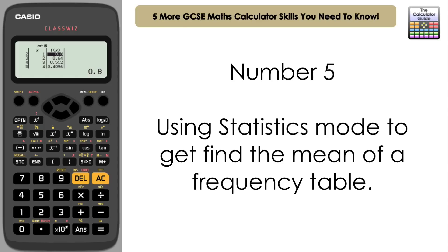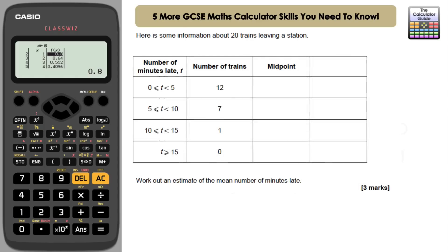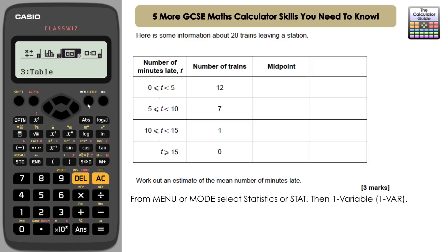Let's take a look at the question. Here is some information about 20 trains leaving a station. We've got 12 trains between 0 and 5 minutes late, we've got 7 trains between 5 and 10 minutes late, and we've got 1 train that's between 10 and 15 minutes late. No trains that are greater than or equal to 15 minutes. We've got to work out an estimate of the mean number of minutes late.